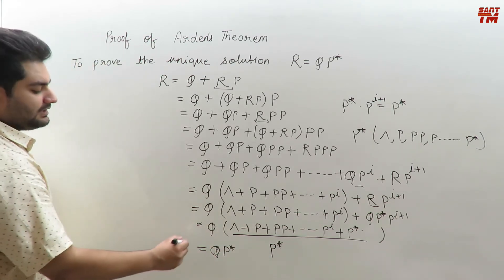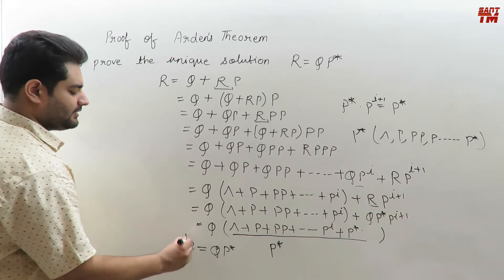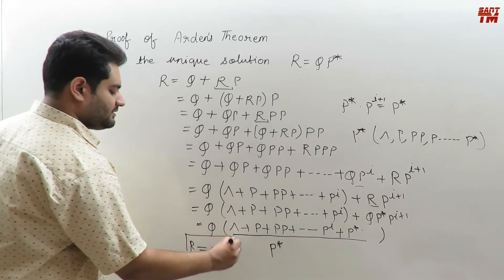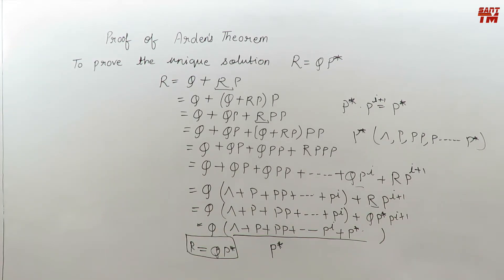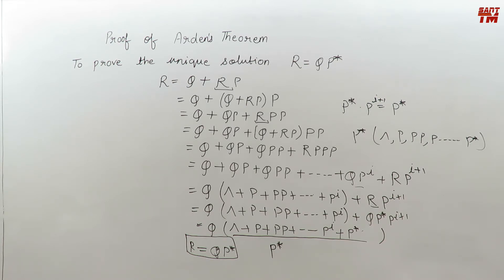We get QP-closure, which is the unique solution of Arden's theorem. That means there is no other way to reach another solution for R equals Q plus RP — every time we will get the same solution R equals QP-closure. Therefore, it is the unique solution and Arden's theorem is true.